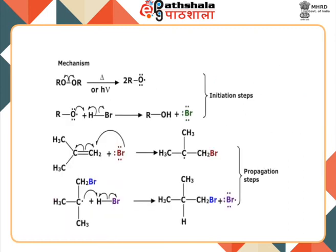The mechanism proceeds in various steps. The first step is the initiation step in which the benzoyl peroxide dissociates to give a free radical; that free radical then leads to homolytic cleavage in HBr to form a bromine free radical. In the next step, the bromine free radical reacts with the alkene molecule to form an alkyl free radical. This can happen in two ways and the more substituted radical is more stable. So a tertiary radical is generated. This radical further reacts with HBr to form the alkyl halide along with formation of a bromine free radical, which further propagates the reaction.